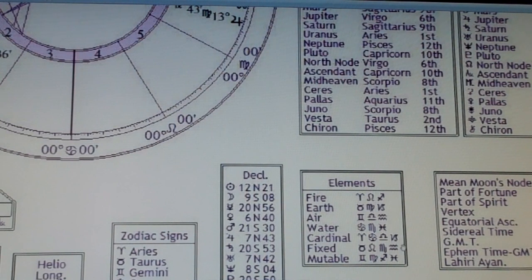They also are a quality. They're either cardinal, fixed, or mutable. The cardinal signs are Aries, Cancer, Libra, Capricorn. Fixed signs are Taurus, Leo, Scorpio, Aquarius. Mutable is Gemini, Virgo, Sagittarius, Pisces.